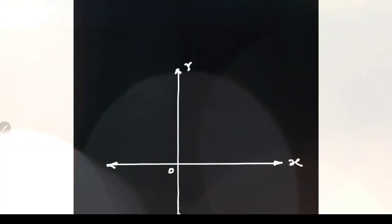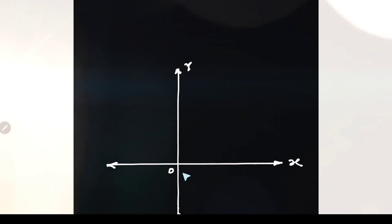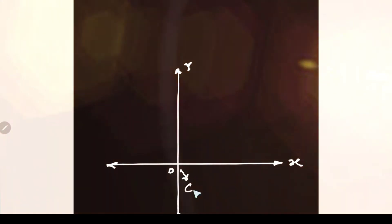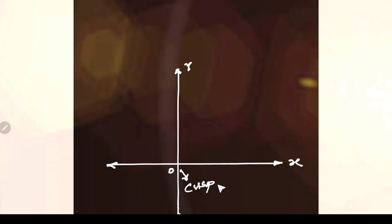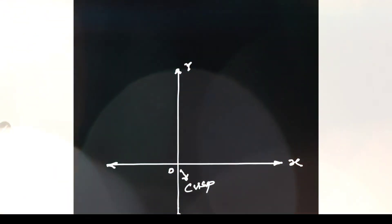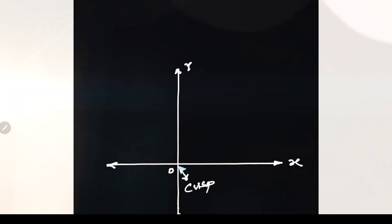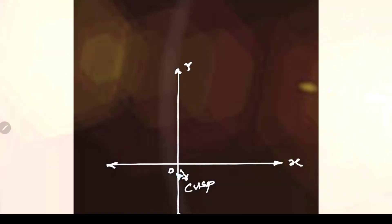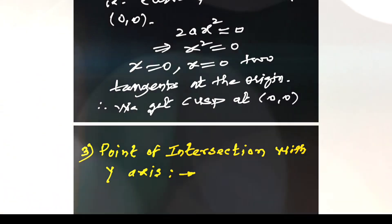x = 0 means the y-axis. Therefore, the y-axis is a common or repeated tangent. And whenever we get a common tangent at the origin, we get a cusp point. We get a cusp at the origin — cusp means a pointed shape.